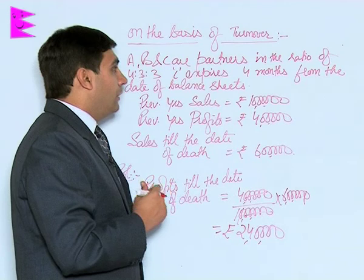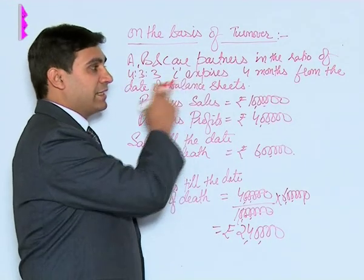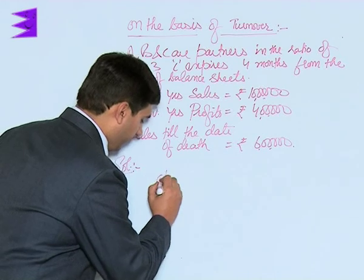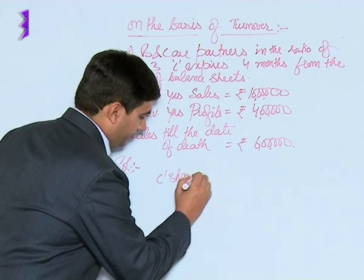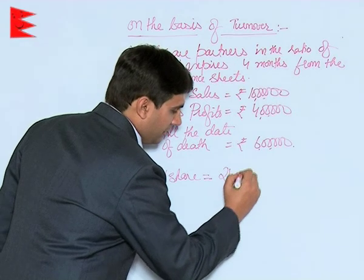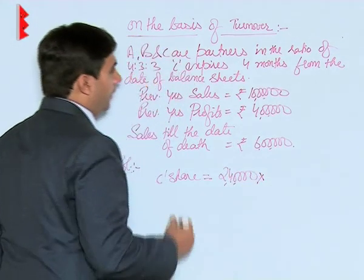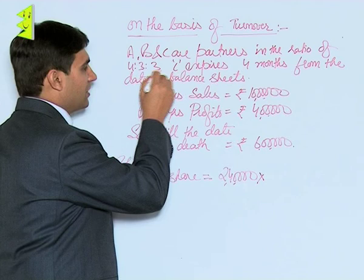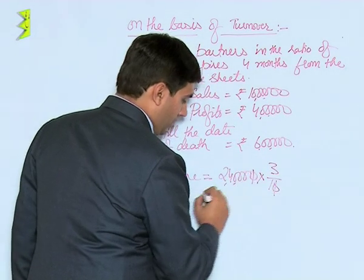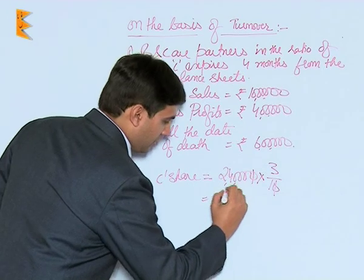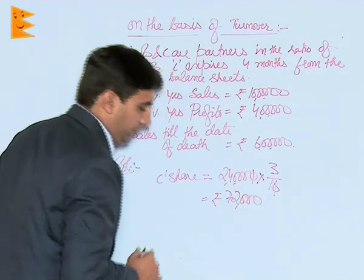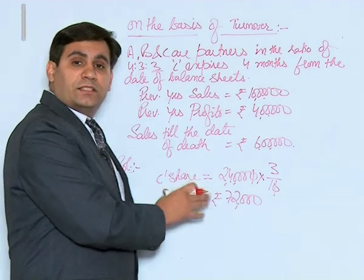Now let us calculate the share of the deceased partner C. C's share equals two lakh forty thousand multiplied by C's share of profits, which is 3/10. So C's share comes to rupees seventy-two thousand.